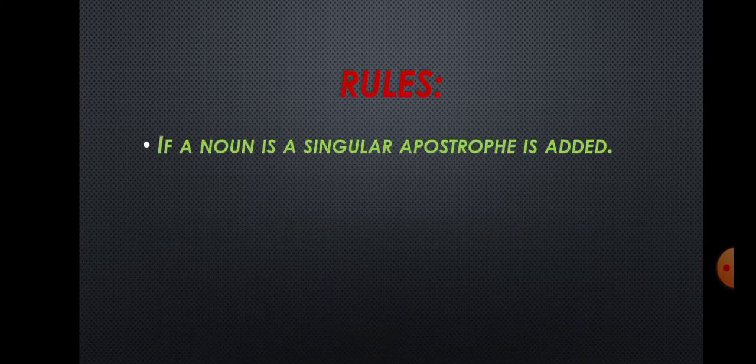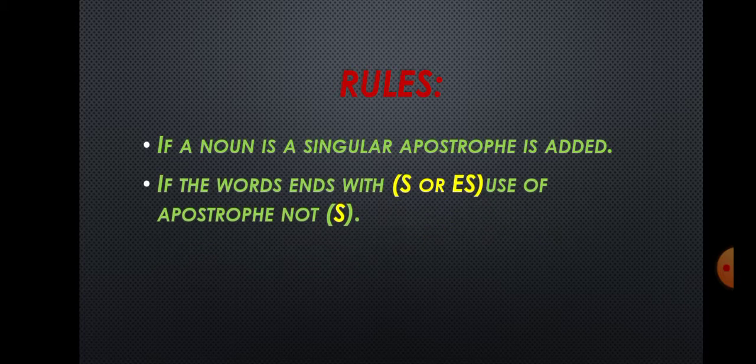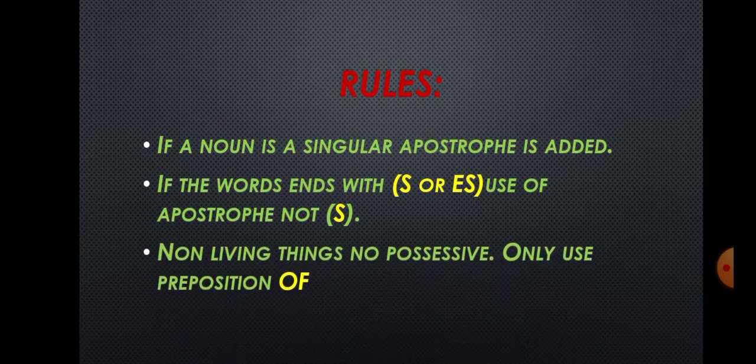Rules for possessive case: First, if a noun is singular, apostrophe 's' is added - like 'child's.' Second, if a word ends with 's' or 'es' (his sound), we only add apostrophe without an extra 's' - like 'boys'', 'girls'.' Third, for non-living things, we don't add possessive apostrophe - we use the preposition 'of' instead.